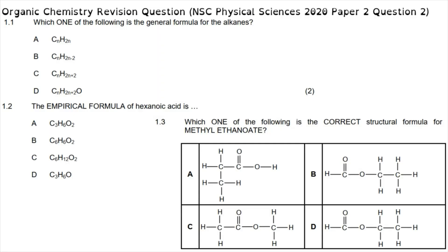The organic chemistry section of the chemistry paper starts with question 1.1, which asks for the general formula for alkanes. Alkanes always have the general formula CₙH₂ₙ₊₂, alkenes have the general formula CₙH₂ₙ, and alkynes have the general formula CₙH₂ₙ₋₂.